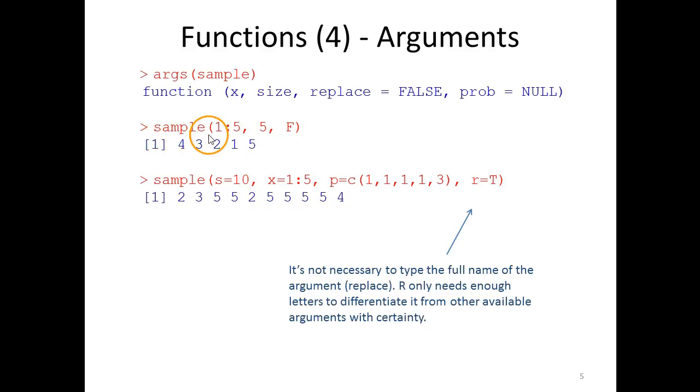So if we try to use this function sample, we could for example write sample one colon five, which gives us a vector containing the numbers one to five. We want a sample size of five, we want five numbers sampled from this vector.